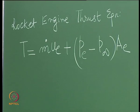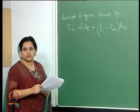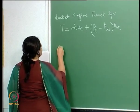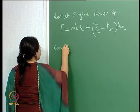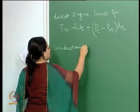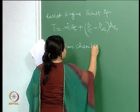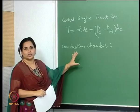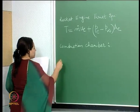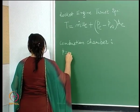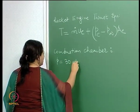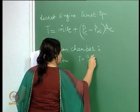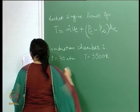Given that: we have liquid hydrogen and oxygen which are burnt in a combustion chamber producing a combustion gas. In the combustion chamber, liquid hydrogen and oxygen are burnt, which results in a pressure of 30 atmospheres and a temperature of 3500 Kelvin.